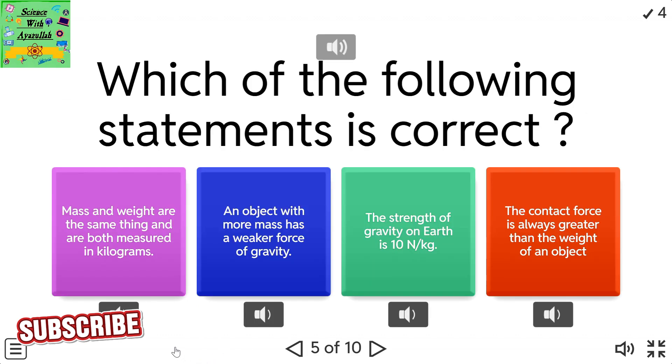Which of the following statements is correct? Mass and weight are the same thing and are both measured in kilograms. An object with more mass has a weaker force of gravity. The strength of gravity on Earth is 10 newtons per kilogram. The contact force is always greater than the weight of an object.